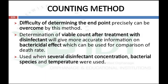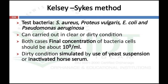The counting method overcomes the difficulty of determining the endpoint precisely. Determination of viable count after treatment with a disinfectant gives more accurate information on bactericidal effect, which can be used for comparison of death rates. This method is used when several disinfectant concentrations, several bacterial species, and several temperatures are compared.